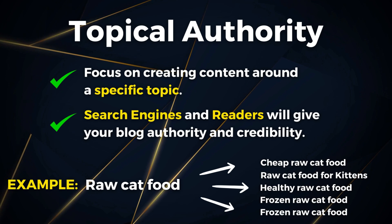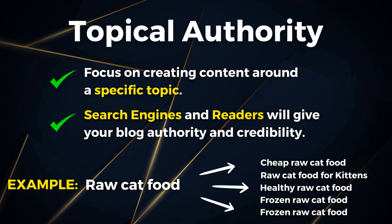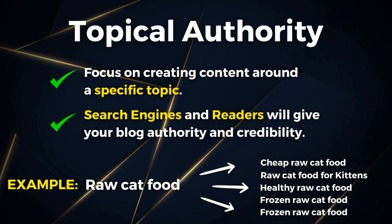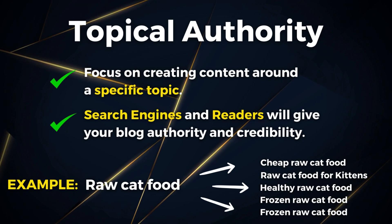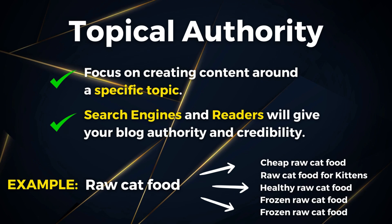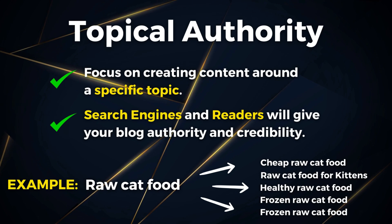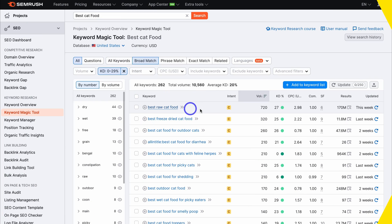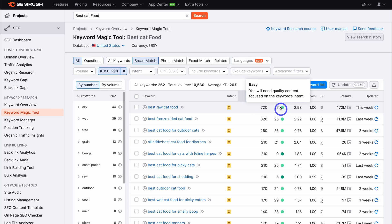A topic I could target and build content around would be 'raw cat food,' and I want to become an authority on that topic. When would you decide that you want to become an authority on a specific topic? Well, you want to look at the search volume — is there high search volume and low keyword difficulty in terms of ranking your blog on top of search engines?